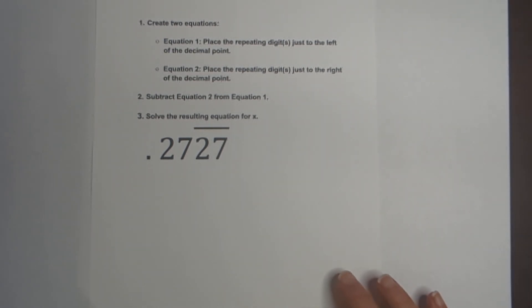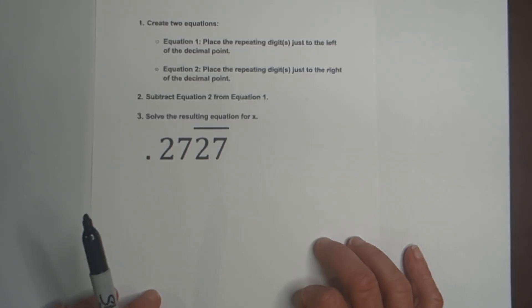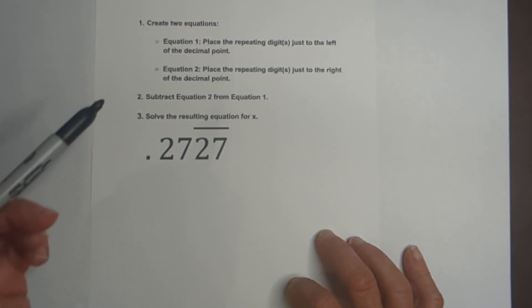Welcome to Moo Moo Math and Science. In this video, let's go over how to convert the repeating decimal 0.2727 repeating into a fraction. And here's what we're going to do.